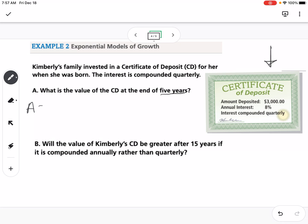So we are really just going to plug our numbers into the formula here. So we have 3,000 times (1 + 0.08/4)^(4×5).